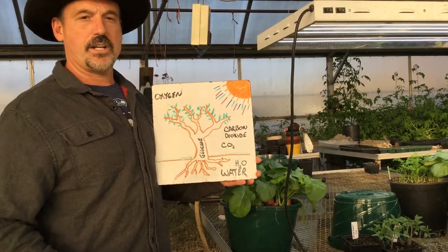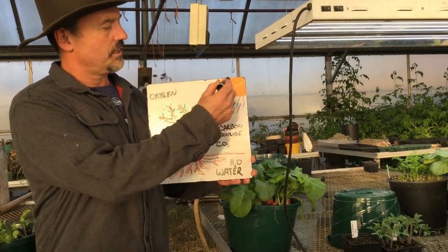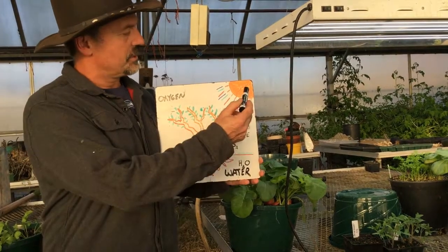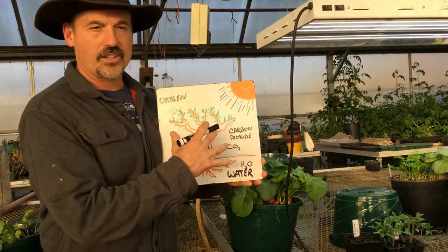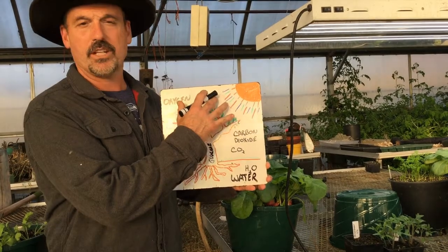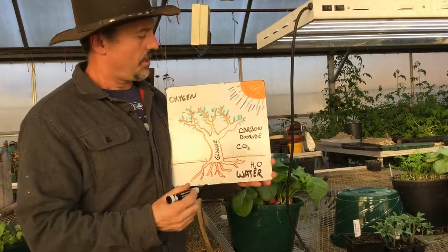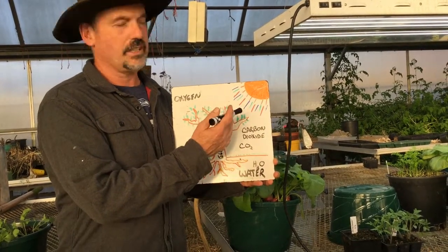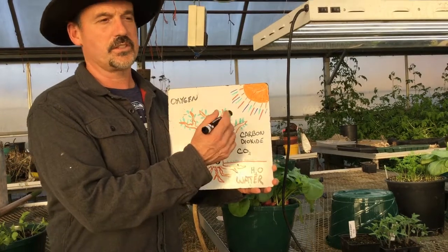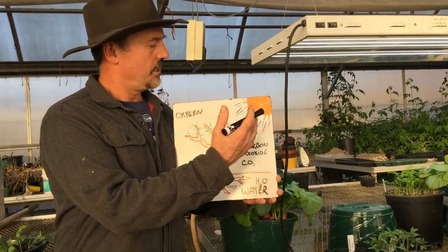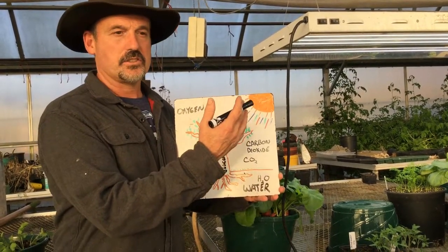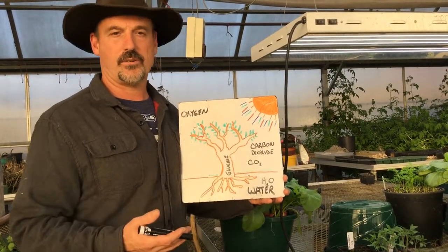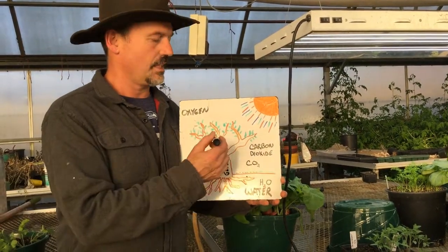The greatest form of energy on earth is the Sun. The Sun is up in the sky sending down light rays to us, and those light rays come in red, green, and blue. The green leafy parts of plants appear green to us because they're reflecting back the green rays — and they're absorbing the red and the blue. It's actually the red and blue light rays that are producing the energy.